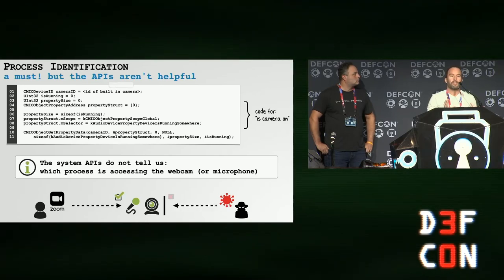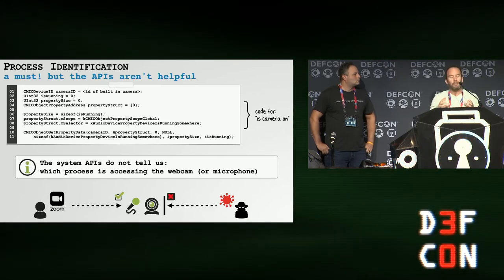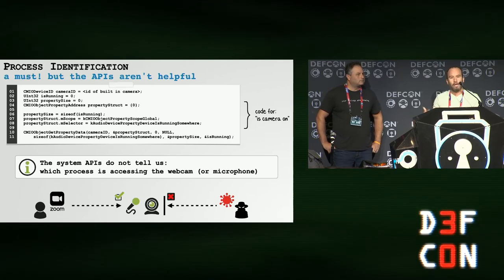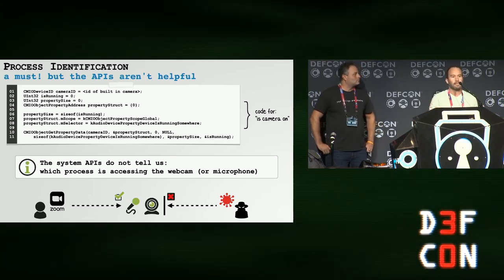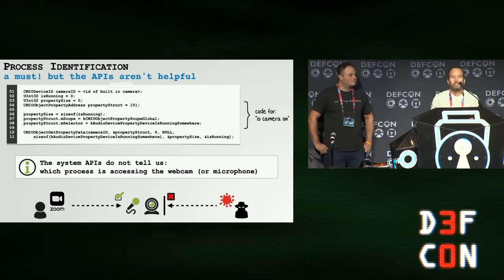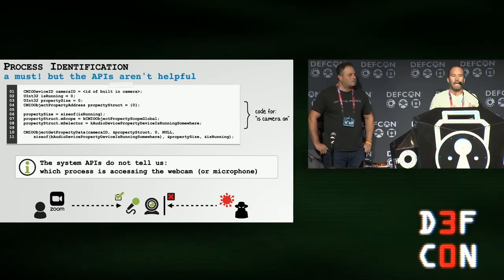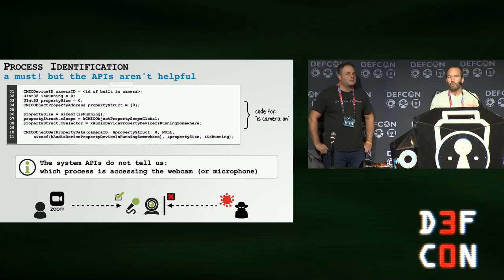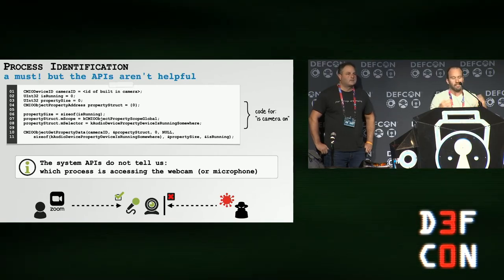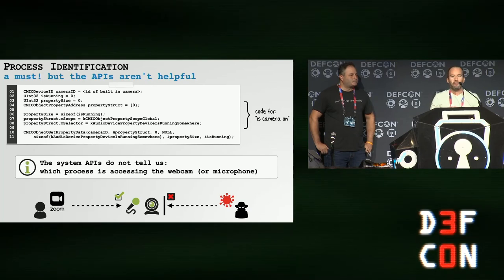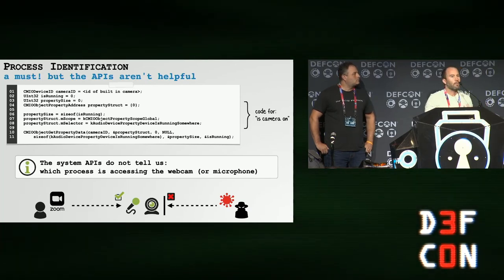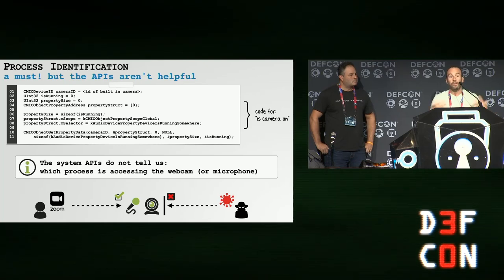Back to Oversight's killer feature: the ability to identify what process is accessing the mic or webcam. For a security tool, this is obviously a must-have. If the process accessing the mic or webcam is Zoom, Skype, or FaceTime, that's fine — maybe don't even alert the user. But if it's some unrecognized program or malware, you obviously want to alert the user.